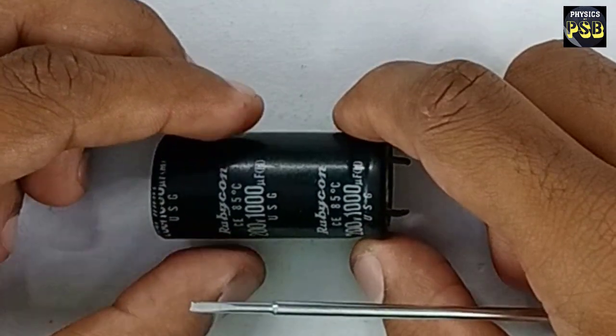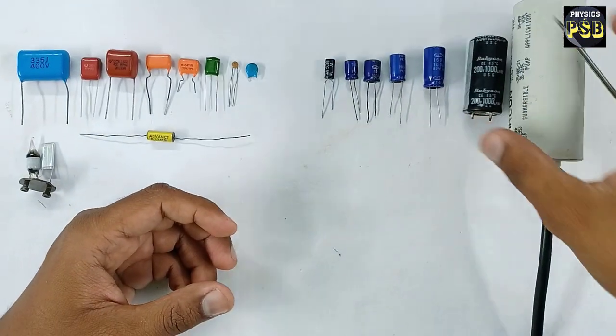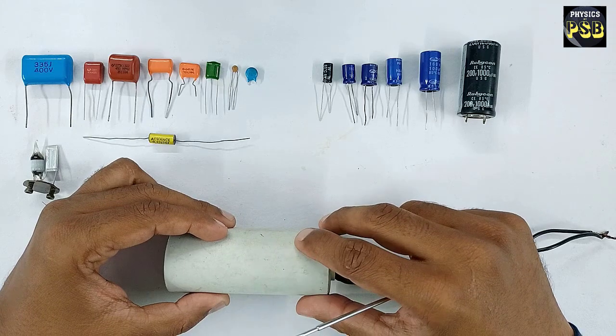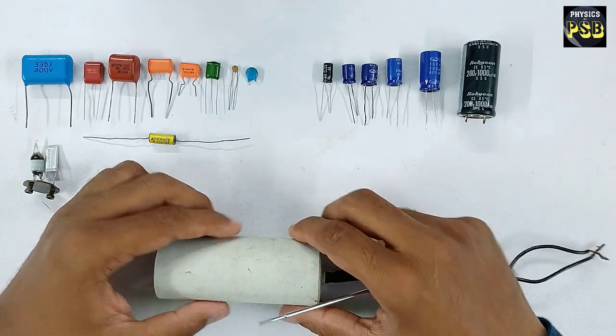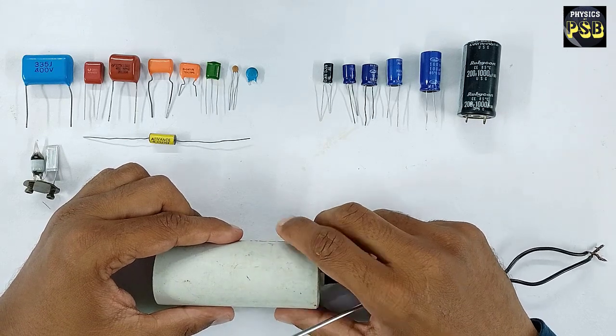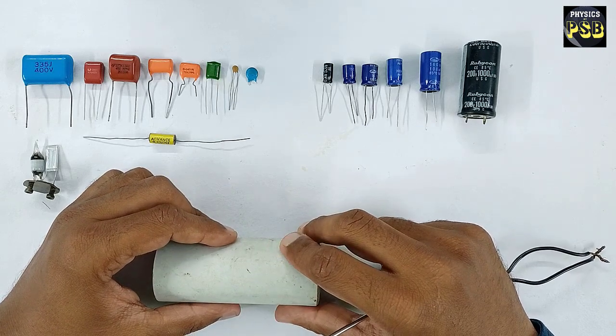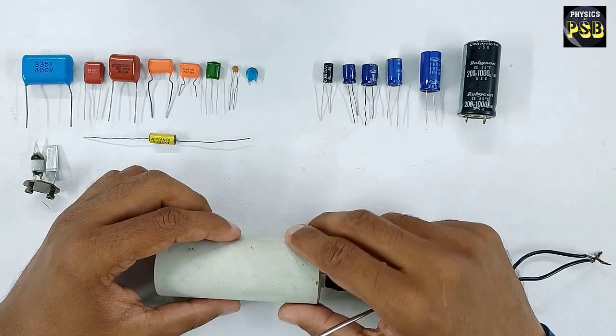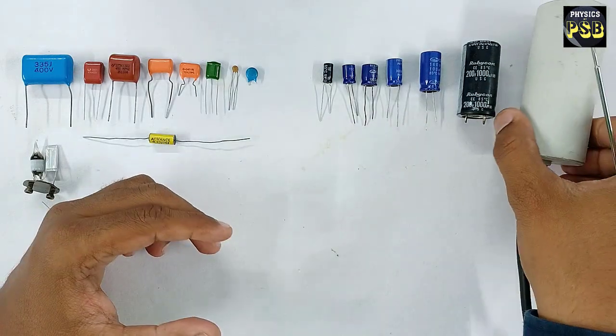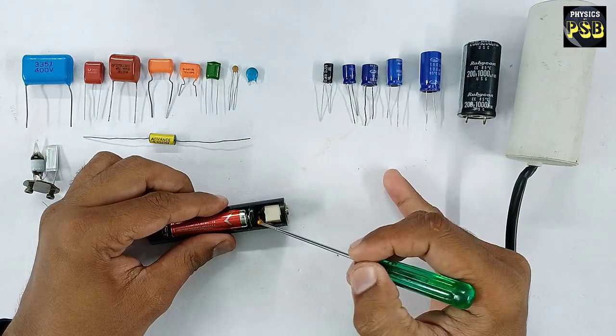I have one more capacitor with me. This kind of large-sized capacitor, which has high capacitance, is usually used in water pumps and is called a condenser. I repeat: capacitors with large capacitance value and large size are usually referred to as condensers.